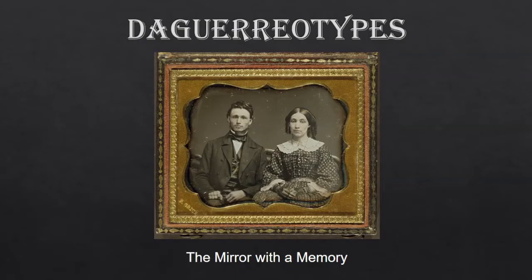The daguerreotype, also known as the mirror with a memory because of its highly polished reflective surface, was introduced in France on August 19, 1839. But before we dive too far into the details of this amazing process, I want to talk a little bit about what led up to the great invention called photography — one that changed the world, I might add. The image shown here is an unidentified man and woman from the Library of Congress Prints and Photographs online collection, created circa 1855.